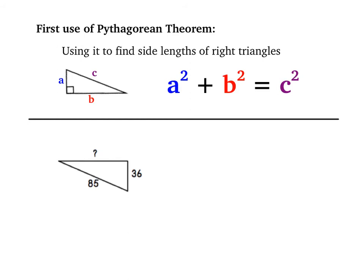To begin example two, I'm going to start the same way by labeling my sides. One thing to notice is here I'm actually given my hypotenuse. C is going to be 85, and then I'm going to call the question mark a, and 36 is b.